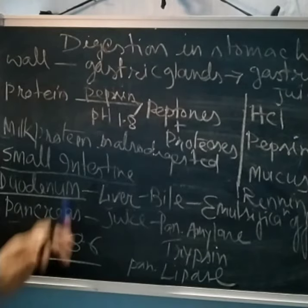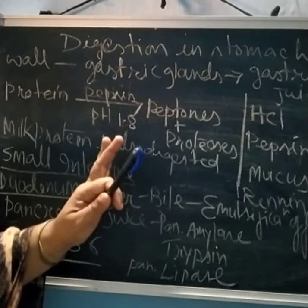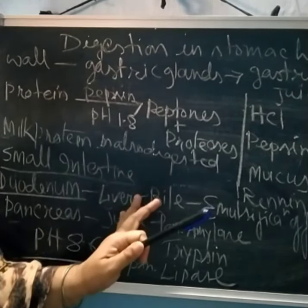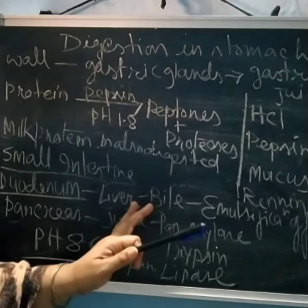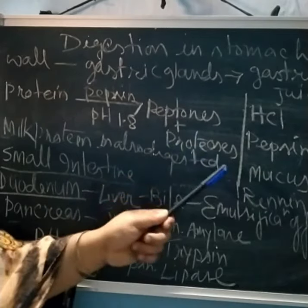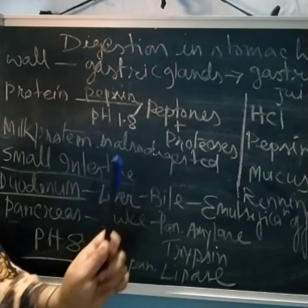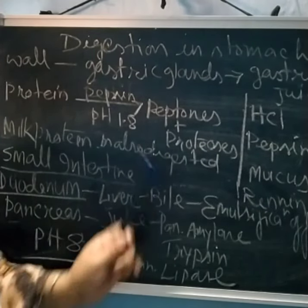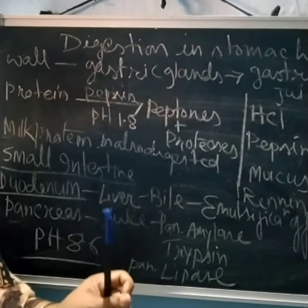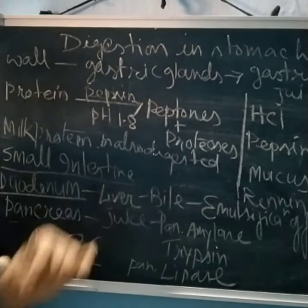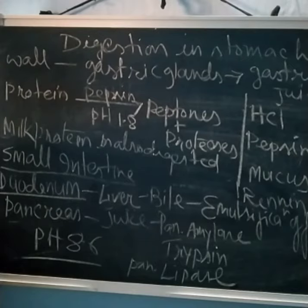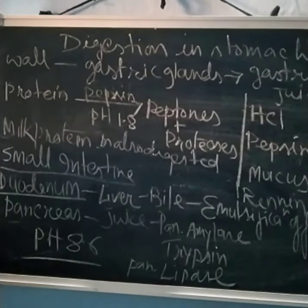In the stomach, carbohydrate digestion does not occur. Only protein digestion takes place in the stomach, and very little fat digestion also occurs.